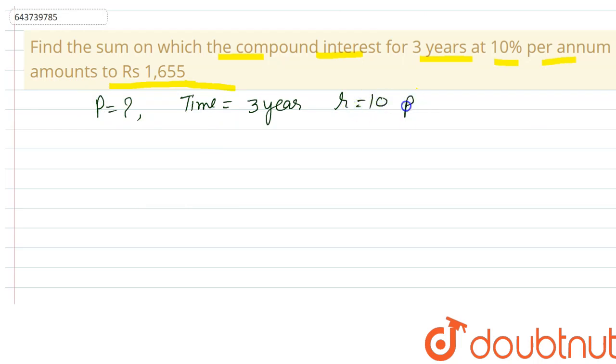For compound interest, we know the formula: A = P(1 + R/100)^n. Here, the amount will be P + 1655, as the compound interest is given. For three years, principal P, 1 plus the rate which is 10%, and power is 3.